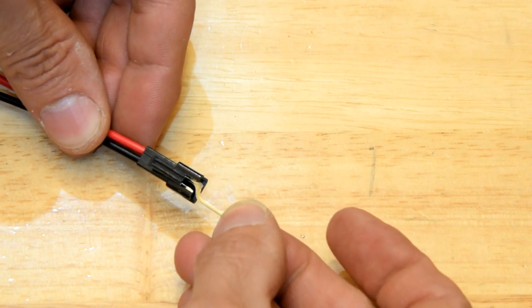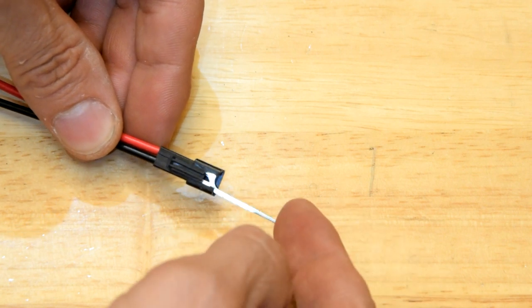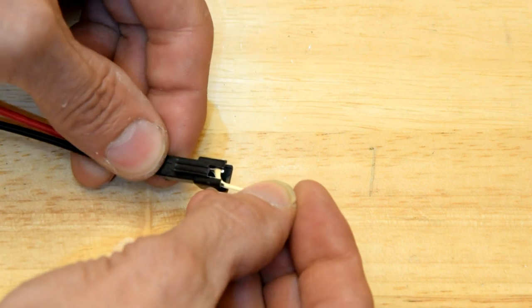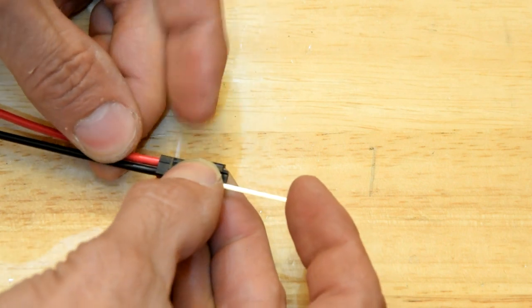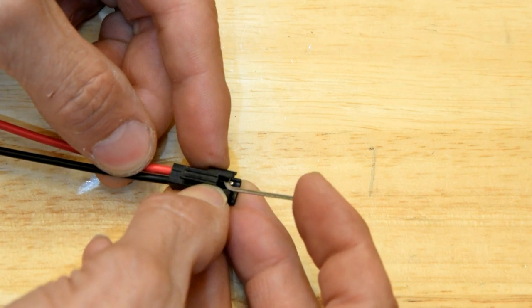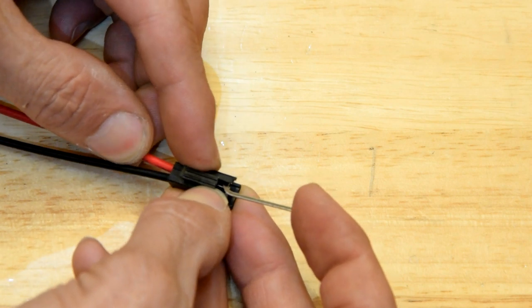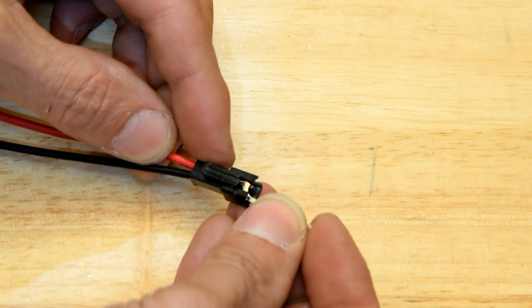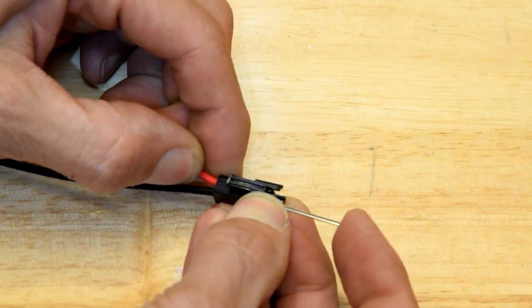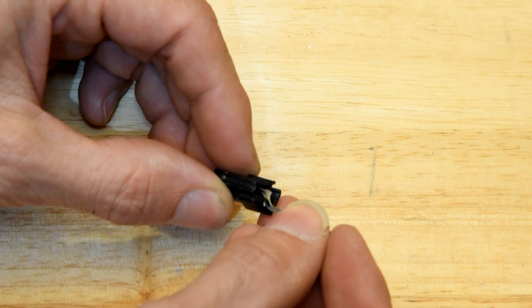They have a little barb that holds them in the connector. So, if you push that down into the top of the pin there, and push the wire in, and then wiggle it around a little bit, you should be able to put some pressure down on that barb, push it back in, and pop it out.